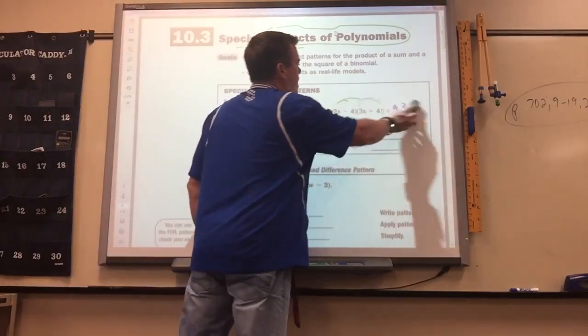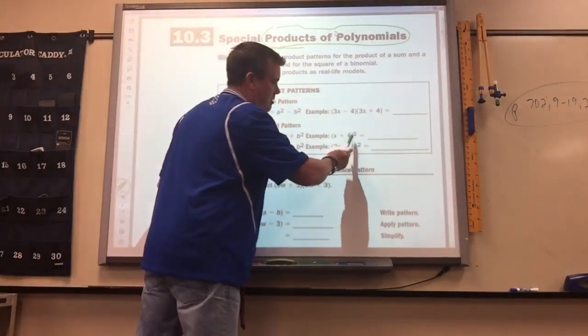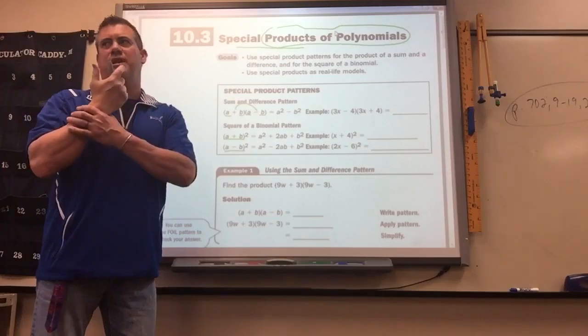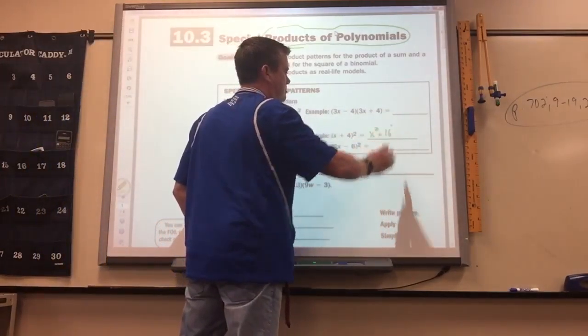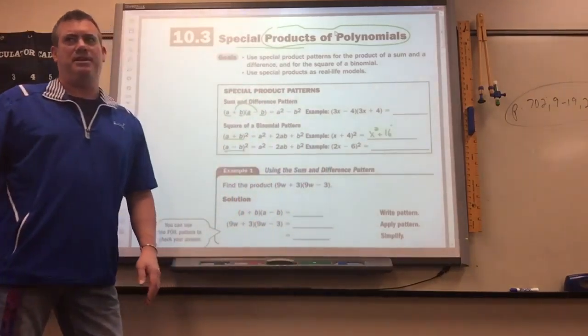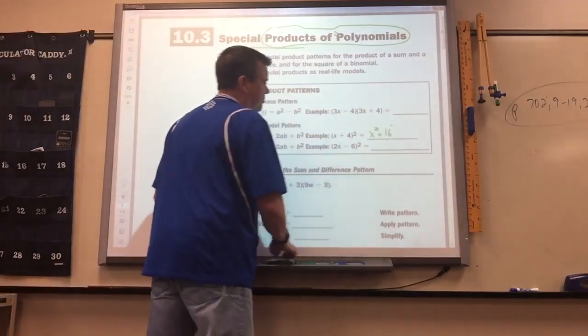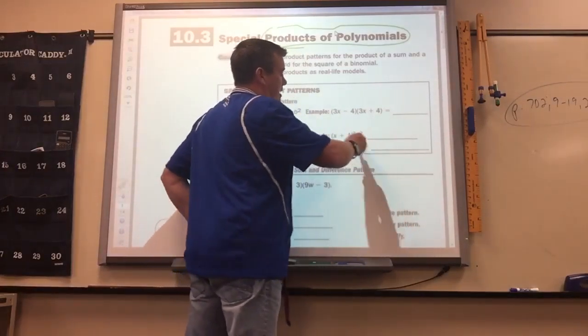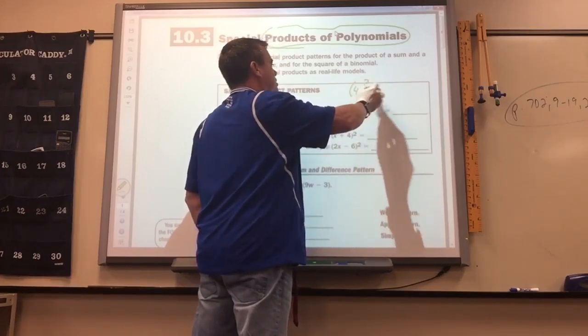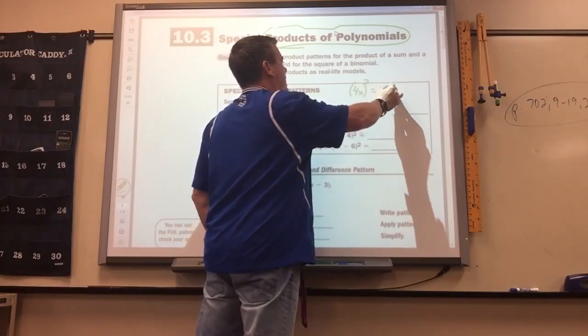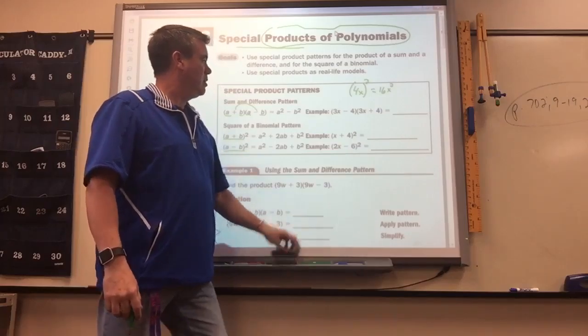Now, when you square a plus b or something plus something squared, here's the common mistake people make. They'll just square the x and square the 4 and get x squared plus 16. It's close, but not quite. The only time you can do that is if it's all multiplied together. If you had 4x squared like that, then you square the 4 and you square the x. But when there are two different terms, you can't just do that.